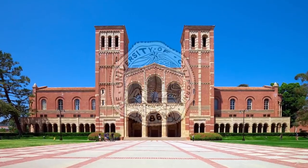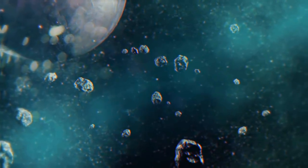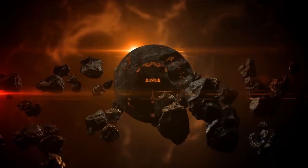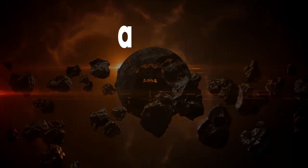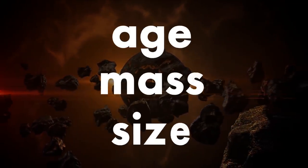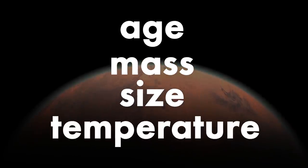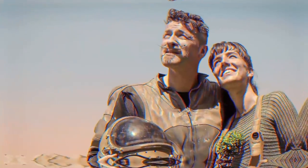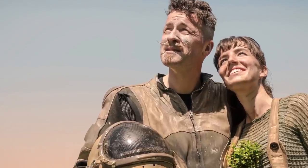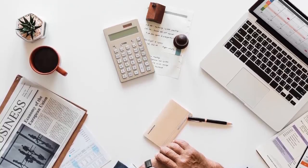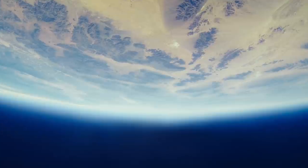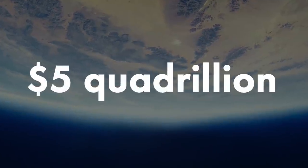Astrophysicists from the University of California derived a universal equation that allows one to calculate the value of celestial bodies. This formula takes into account the age, mass and size of the planet, as well as its temperature and potential suitability for human colonization and habitation. It turns out that the value of our homeless planet Earth is only 5 quadrillion dollars.